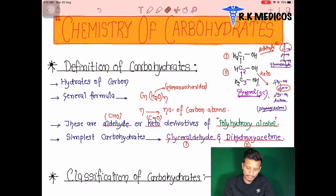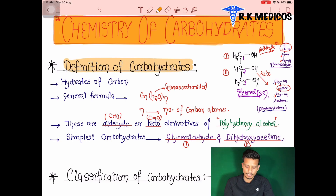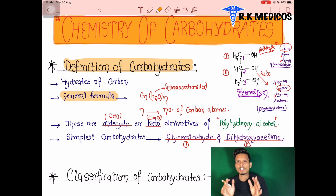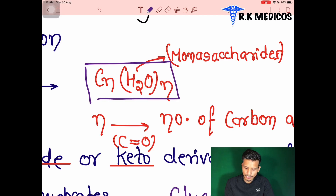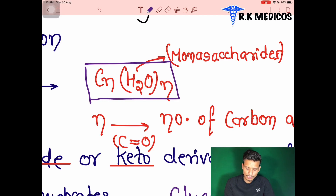So first we will look at the definition of carbohydrates — it is the hydrate of carbon. Next we will see the general formula, which is very simple and common. The general formula for carbohydrates is (CH₂O)n, where n is the number of carbons.